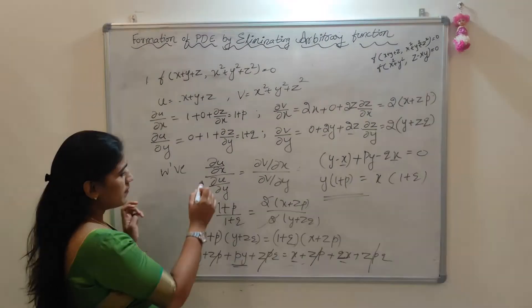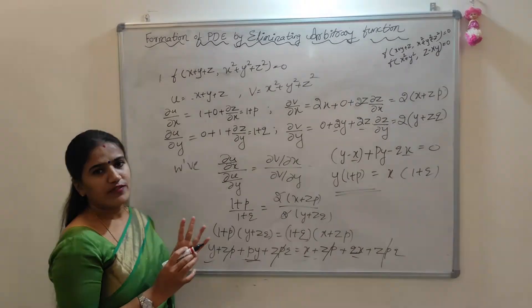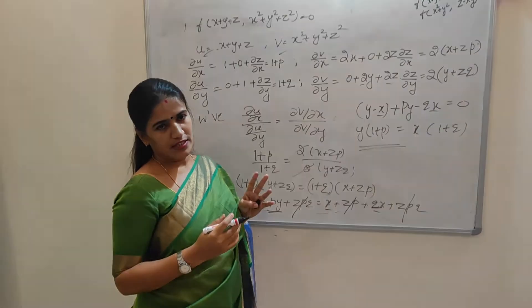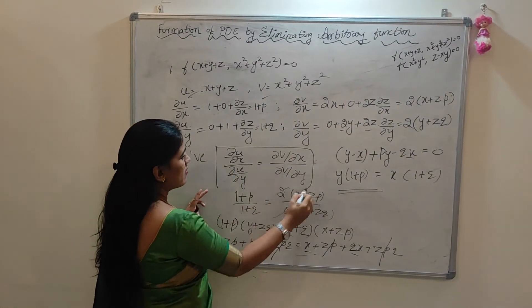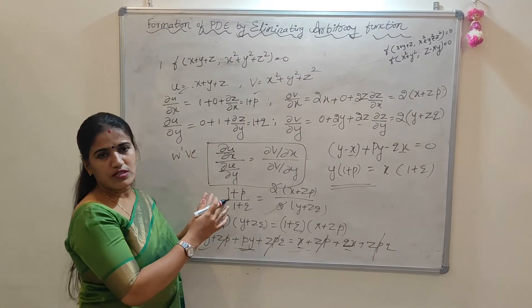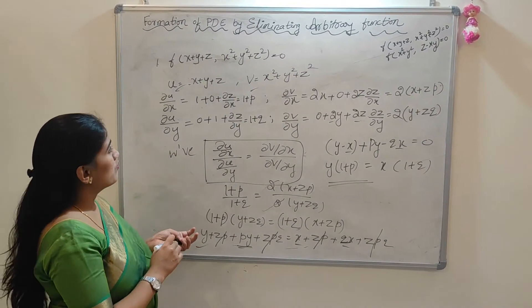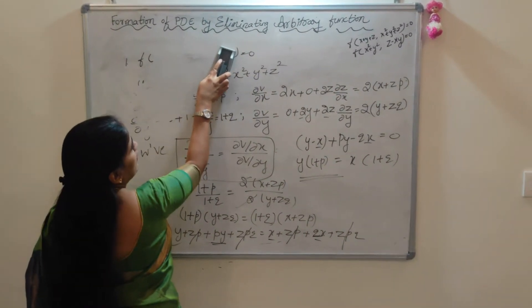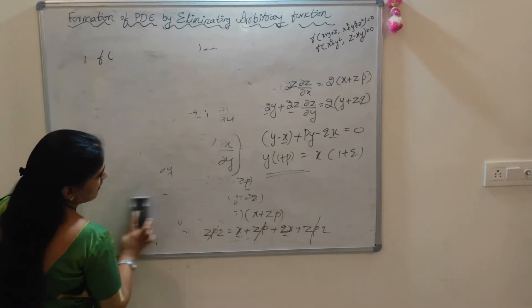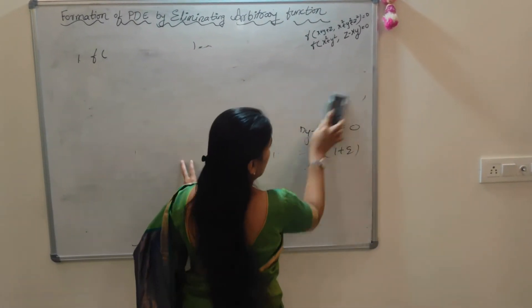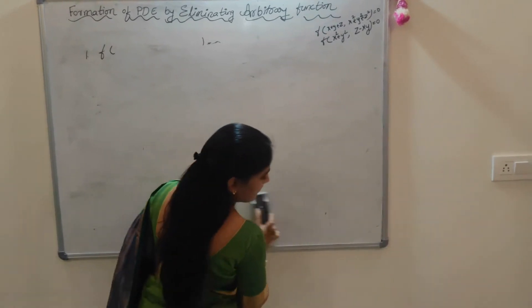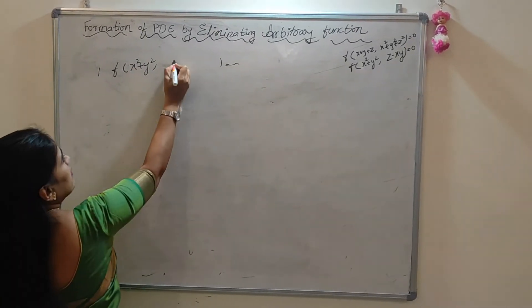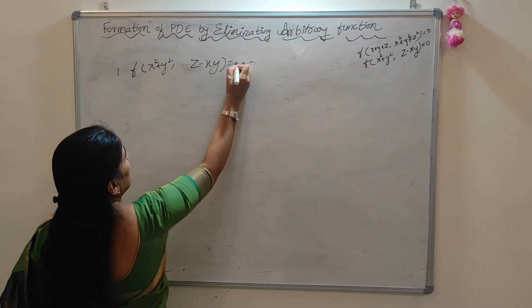Similarly we will do one more problem. This is straightforward — we just need to find all four partial derivatives for u and v, then substitute into the given expression and simplify. Next problem: f(x²+y², z−xy) = 0.